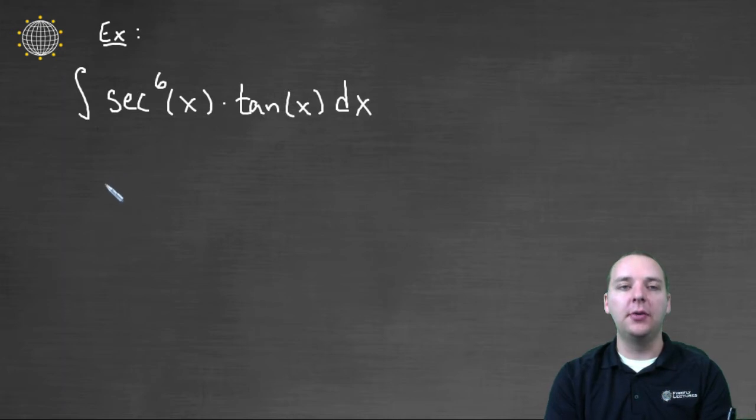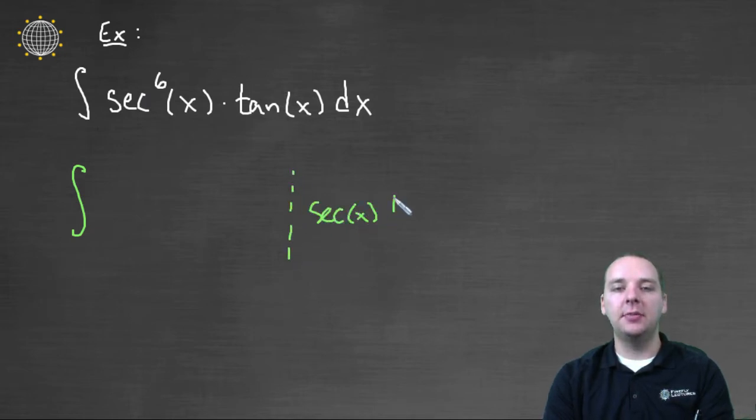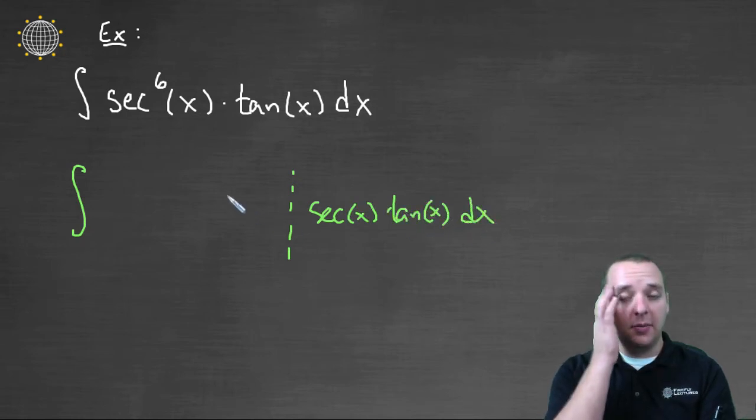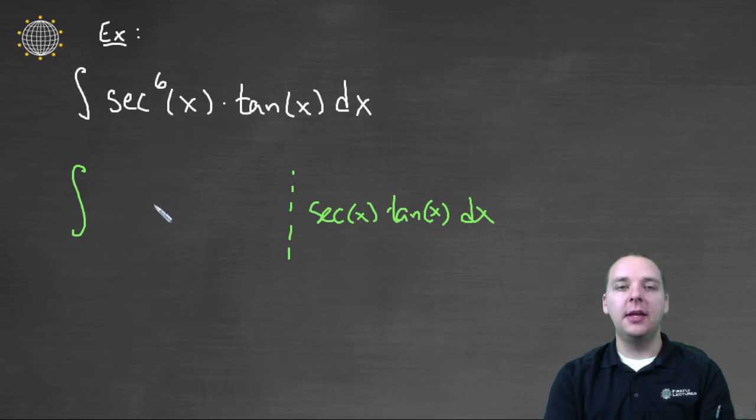Very briefly, I'll give a recap. The basic idea is you would like to save a couple of these factors at the end to be secant x times tangent x. If you can save a secant x and tangent x and convert the rest of the integrand in terms of only secants towards the front of the integrand, then you have a nice u-substitution where you have a function of u and this would be your du.